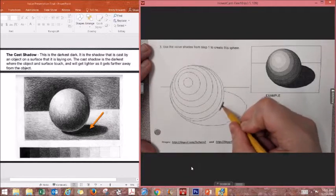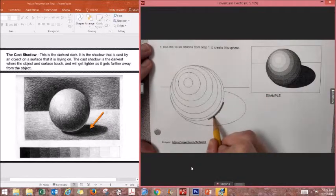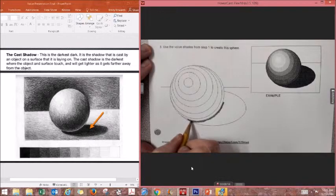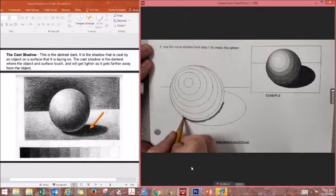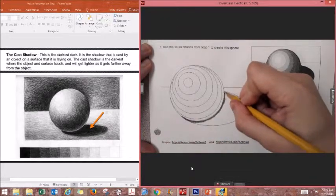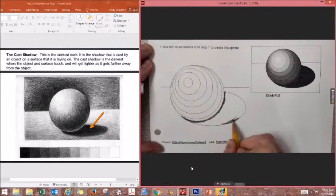A cast shadow is basically what is laying on the surface of the table or whatever surface the object is sitting on. The cast shadow is going to be darkest where the cast shadow and the object meet, and it is going to get lighter as it gets further away.